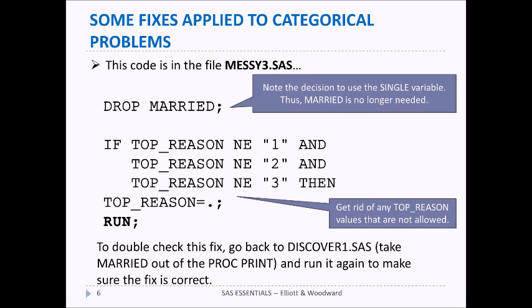And for top reason we're simply going to say if someone didn't answer the required 1, 2, or 3 as an answer we're going to set it to missing because we don't know really what their answer should have been. Once we make corrections to variables like this we might want to go back to discover1.sas, rerun it, and make sure that the fixes have taken place.